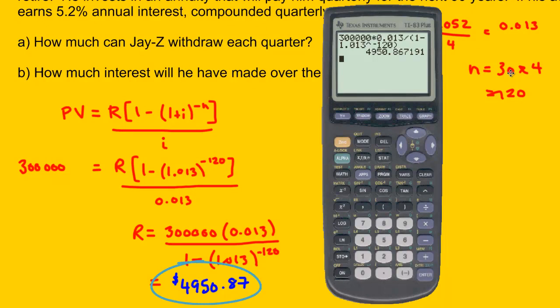At first this seems like a ton of money, because we just talked about Brad and Angelina only taking in $1000 a month. But remember, this is quarterly, so this is for three months total. So approximately $5,000 over three months, what's that? That's about $1,600, $1,700 a month. Now that's not too bad. But $4,950.87 is what Jay-Z will be able to take out of his account every three months, starting with $300,000.